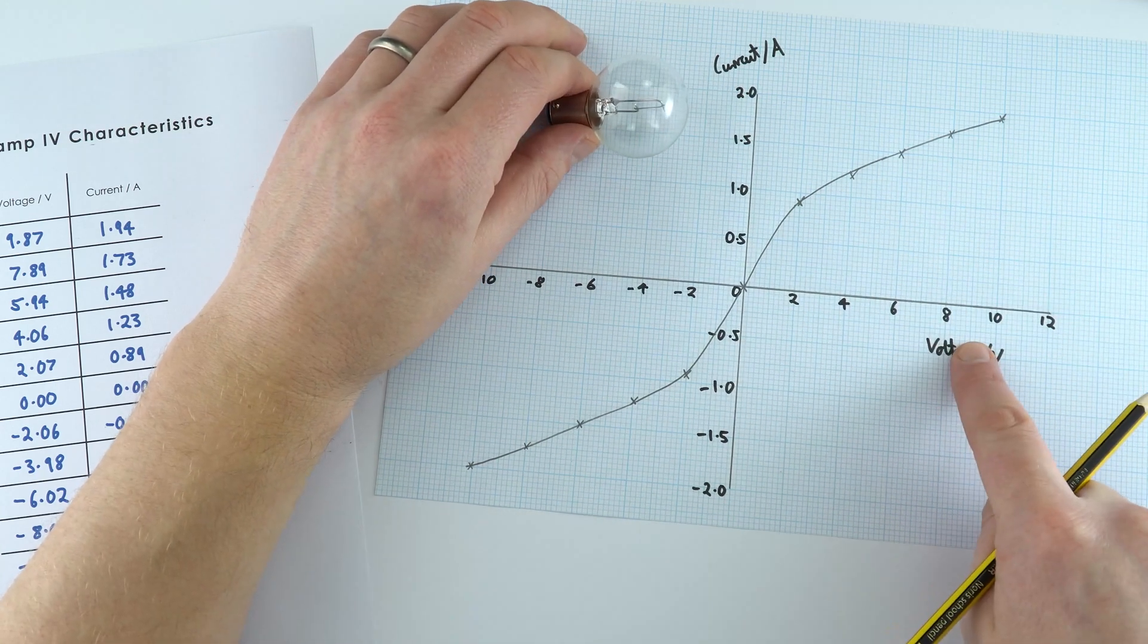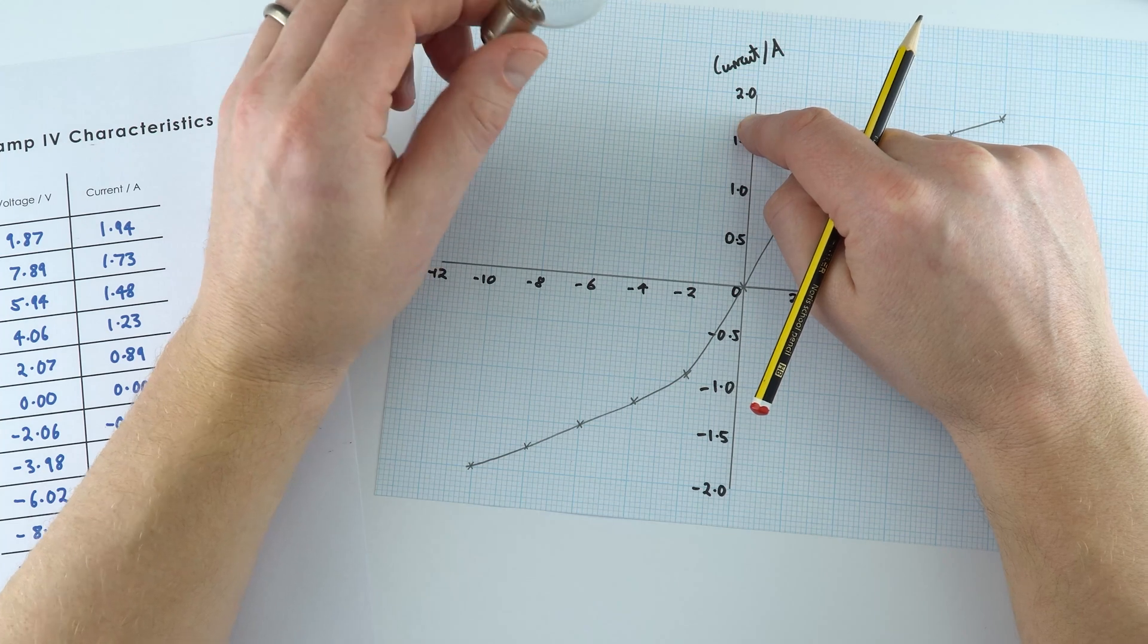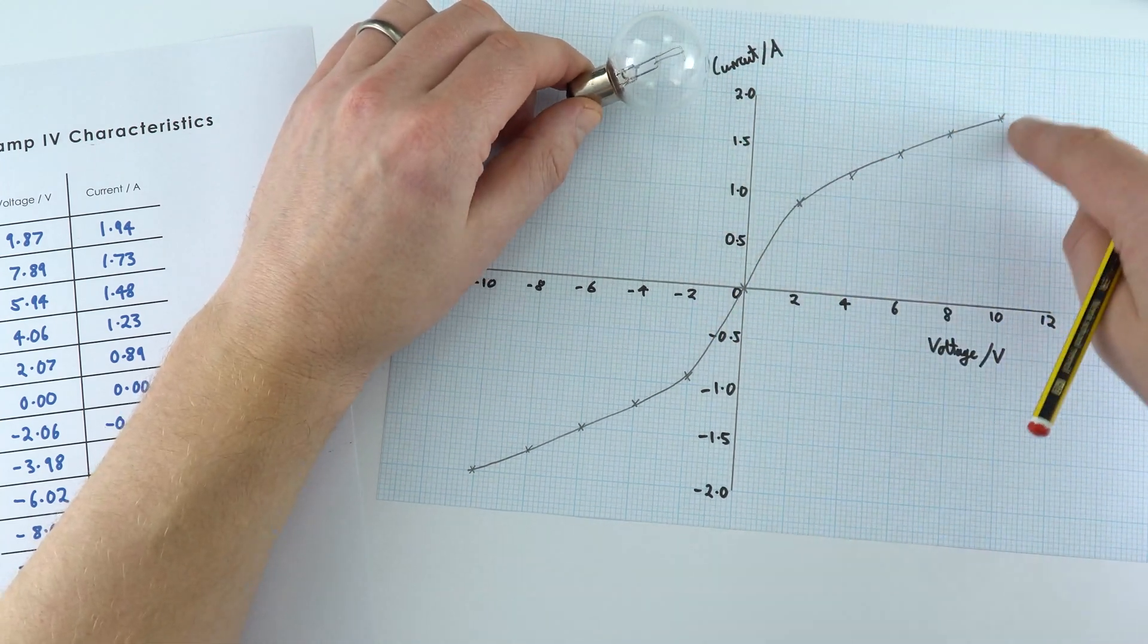In actual fact when we've got a higher voltage we've got a greater current and that means there's a greater heating effect which actually increases its resistance as we have higher values over here.